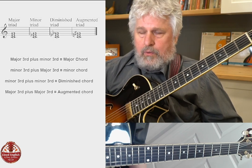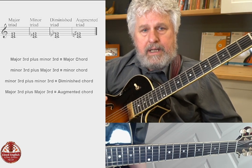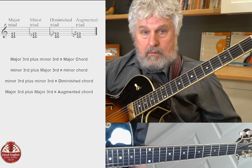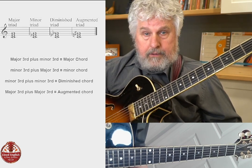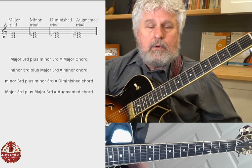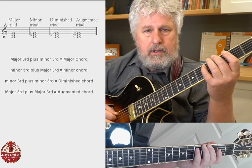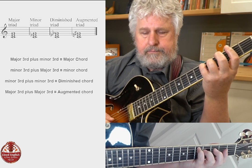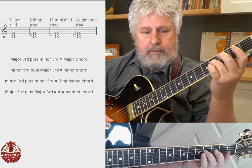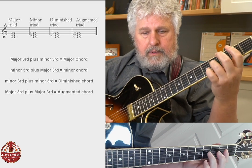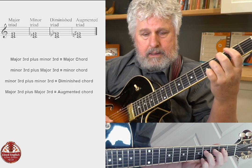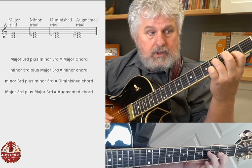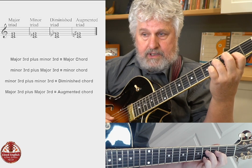Each of these chords is a combination of a major third and a minor third, or two minor thirds, or two major thirds. Let's dig into that a little bit. Starting on D again — here's the major third. And from the third, we construct another third. In this case, it's going to be the minor third.